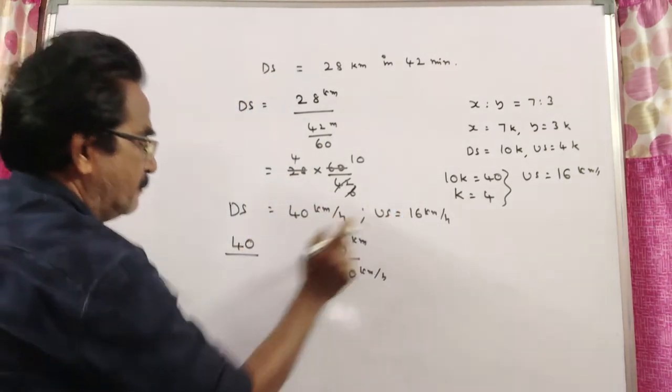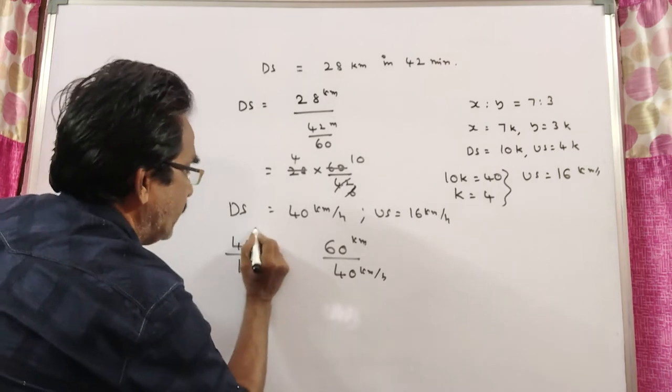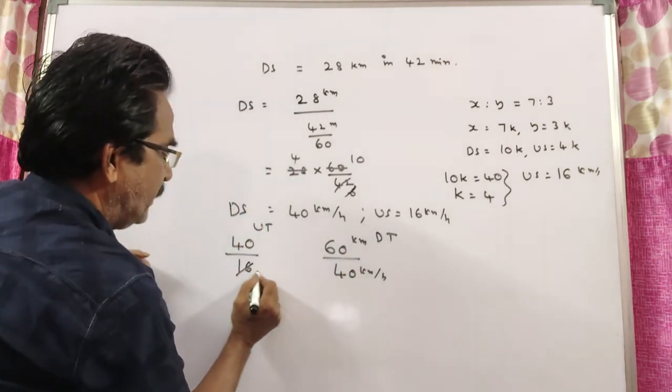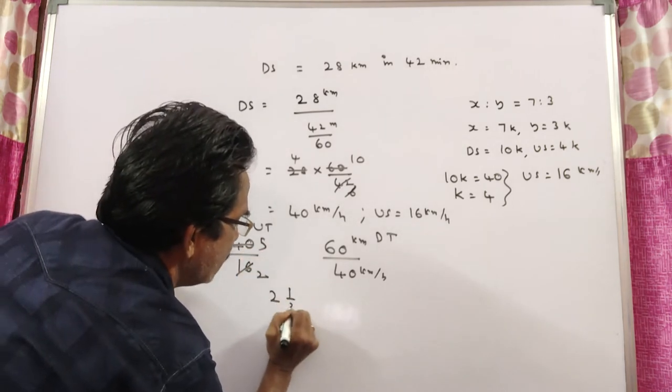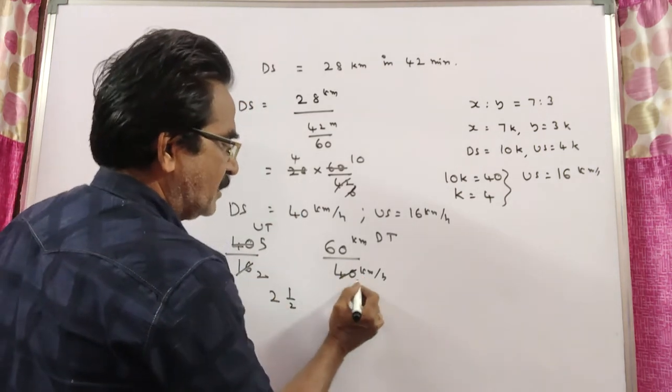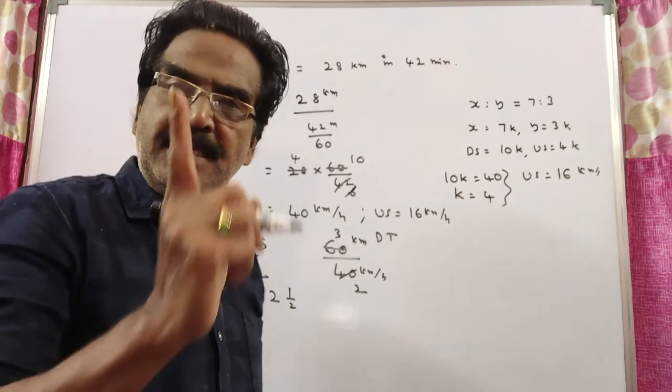40 kilometers upstream at speed 16 kilometers per hour. This is upstream time, this is downstream time. 8 into 2, 8 into 5. 5 by 2 means 2 and a half hours upstream time. Downstream velocity, 2 into 3, 3 by 2, 3 by 2 means 1 and a half hours.